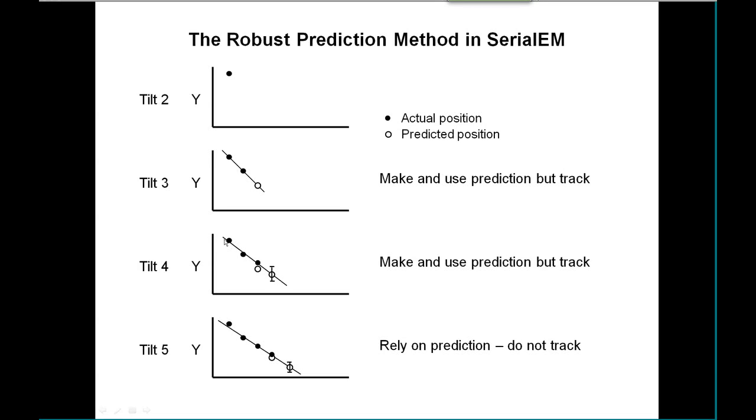We get to the fourth tilt, and now we have enough information to evaluate the prediction in two different ways. First, we have last time's prediction and we have where we really were on the last tilt, and so that's an error in the last prediction. Secondly, we are fitting a straight line to three points, and we can now estimate the standard error of the extrapolated point out here. If either one of these errors—the previous error or the standard error—are too big, it will not rely on the prediction. It will use it but not rely on it; it will go ahead and take a tracking image.